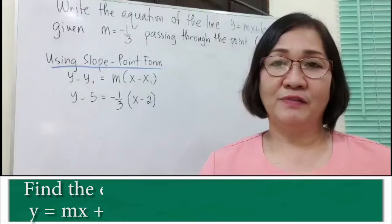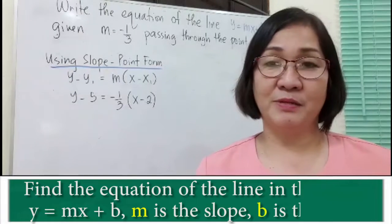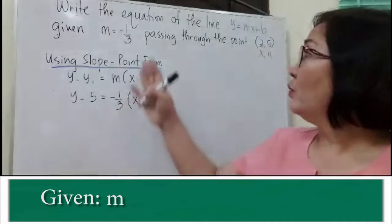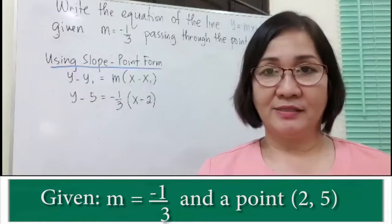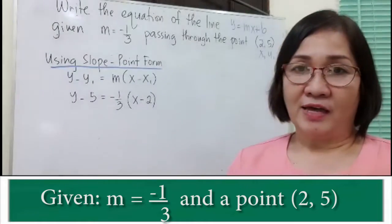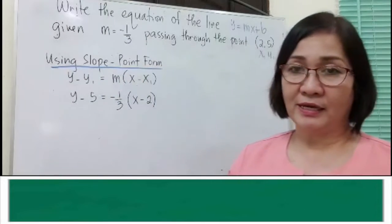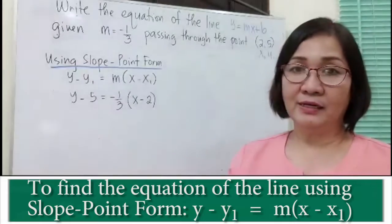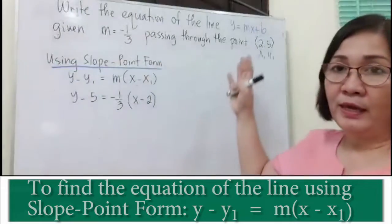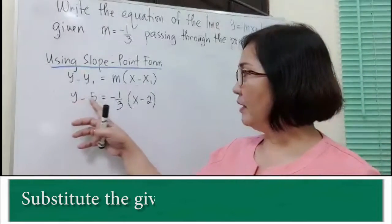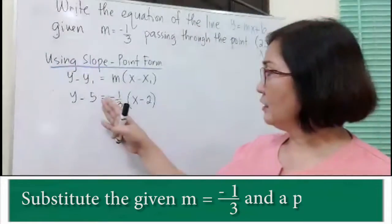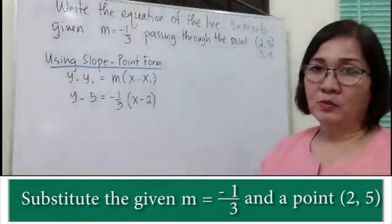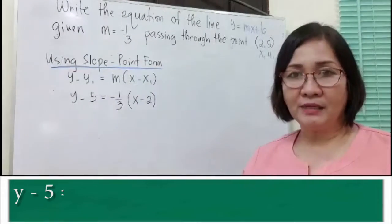Now we're going to write the equation of the line in slope-intercept form y equals mx plus b, where m is the slope and b is the y-intercept. Given the slope which is negative one-third and a point (2, 5). Using the slope-point form again: y minus y sub 1 equals m times x minus x sub 1. Substitute the given slope and coordinates: y minus 5 equals negative one-third times x minus 2.